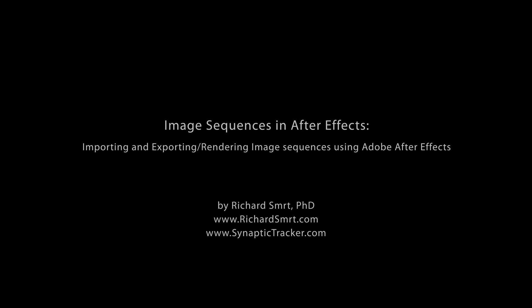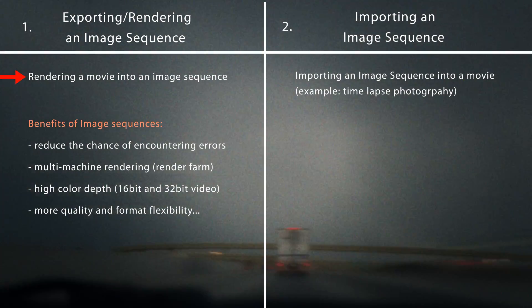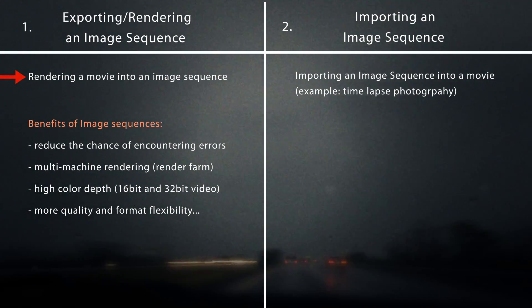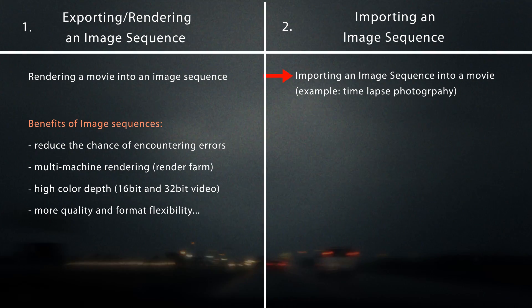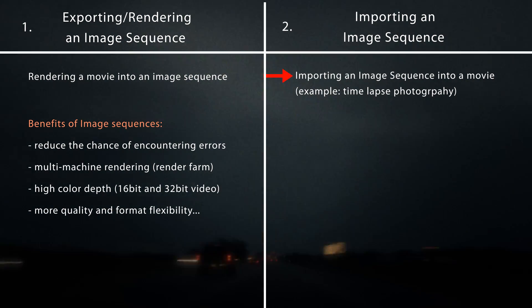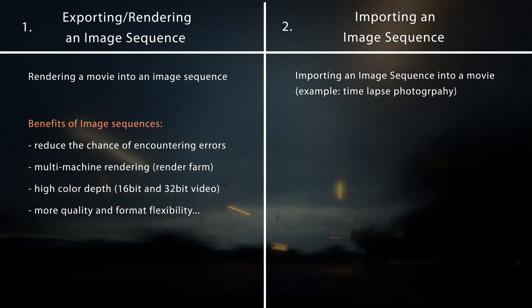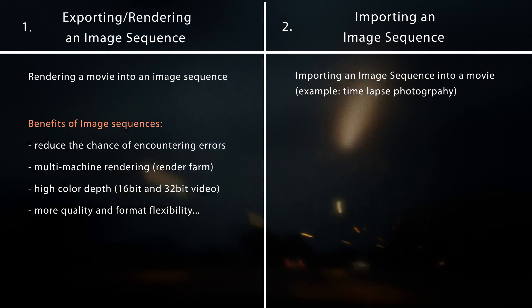In this tutorial, I'm going to demonstrate how to use image sequences in Adobe After Effects, and I'll talk about why image sequences are awesome to use in many rendering situations. First, I'll show you how to render your movie into an image sequence. In the next part, I'll show you how to import an image sequence into a movie. And as an example, I'm going to render images from a time-lapse into a movie.